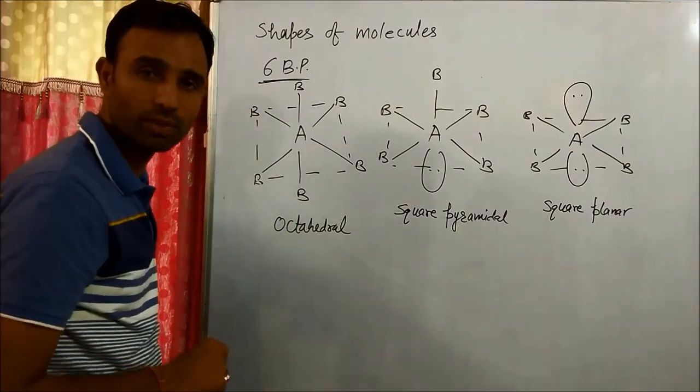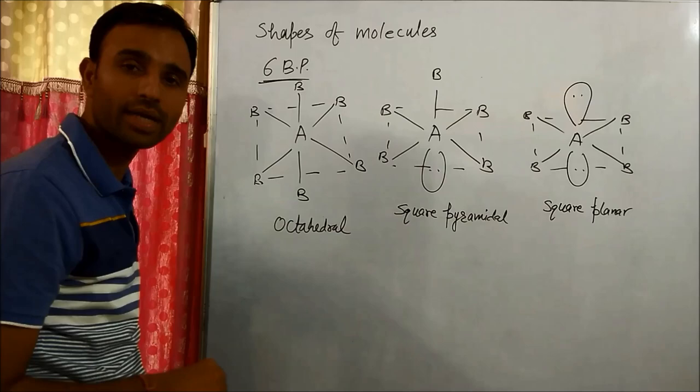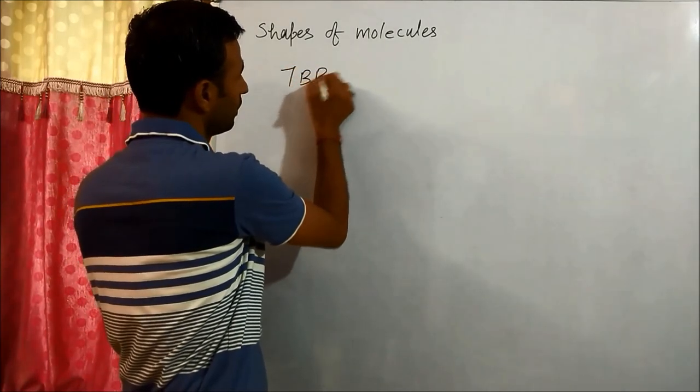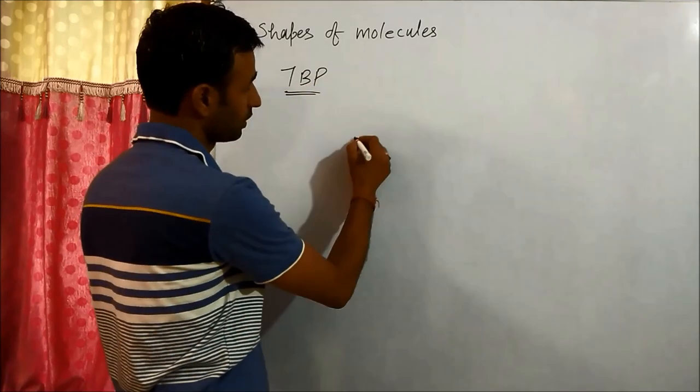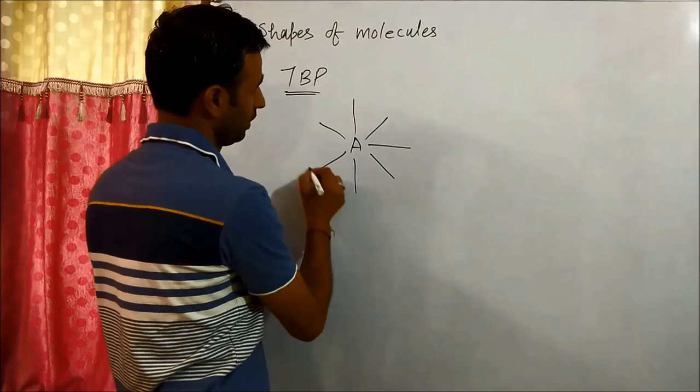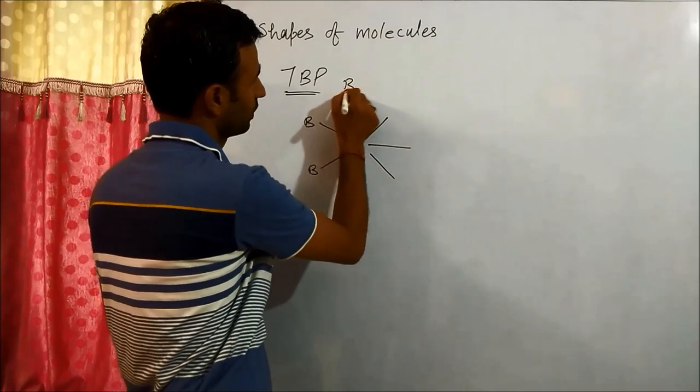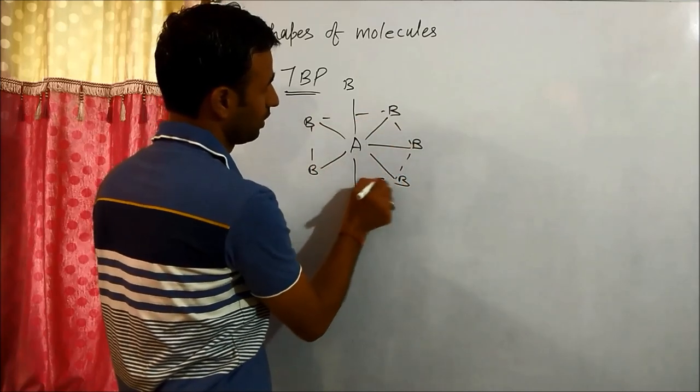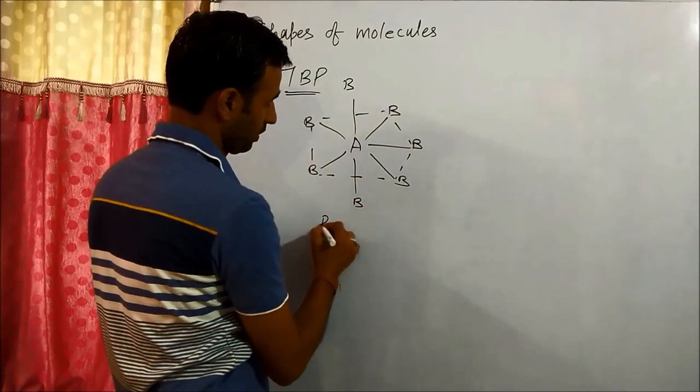All the bonds are at 90 degrees. If we have seven bond pairs, seven electron pairs, then the regular shape is pentagonal bipyramidal.